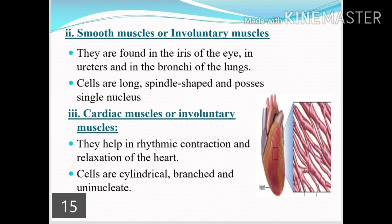The second type of muscular tissue is smooth muscles, also called involuntary muscles. In our body, they are found in the iris of the eye, in the uterus, and in the bronchi present in the lungs. Their cells are long, spindle-shaped, and have a single nucleus.